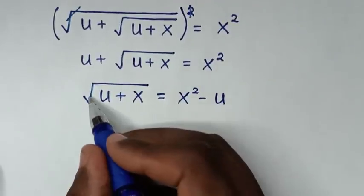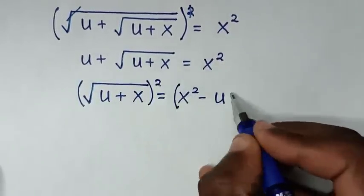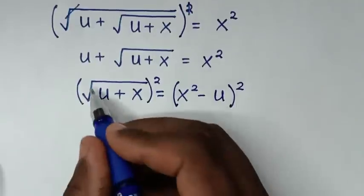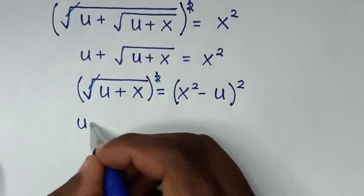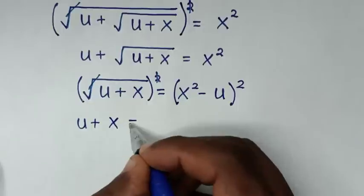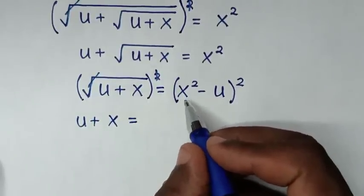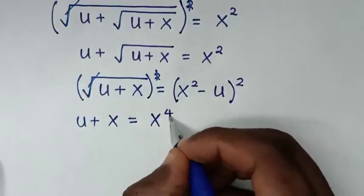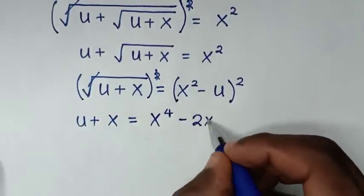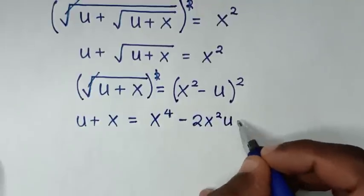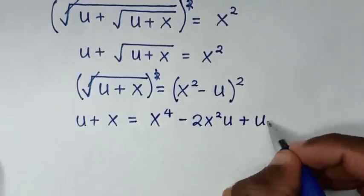To remove this square root, we square again on both sides. This square root cancels with this square, giving: u plus x equals the square of x squared minus u. Expanding: x squared times x squared is x to the power 4, minus 2 times x squared times u, plus u squared.